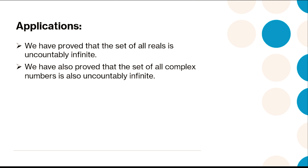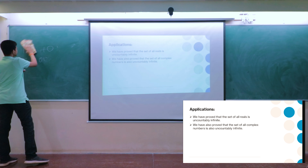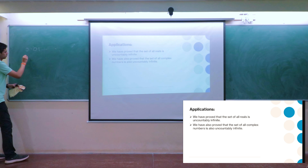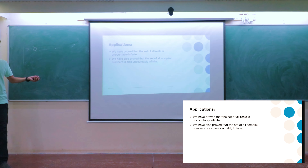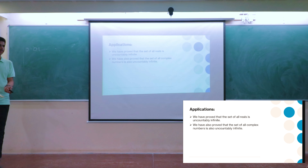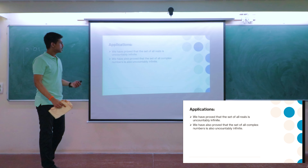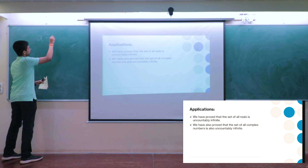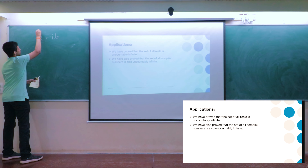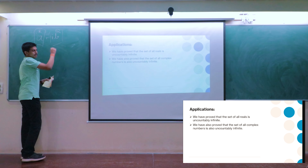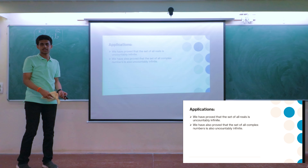The direct application: all real numbers are uncountably infinite. Every binary string can be written as 0.1... in decimal form, so real numbers in just that portion are already uncountably infinite. Therefore the whole set of real numbers is uncountably infinite. Since every complex number is of the form a + bi where a and b are real numbers, and the reals are already uncountably infinite, complex numbers are also uncountably infinite.